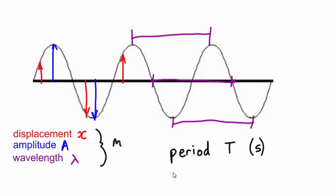The number of waves that pass a point per second is called the frequency. This has the letter f, and the unit is the hertz.